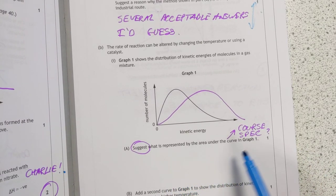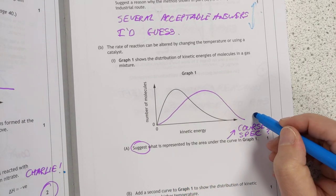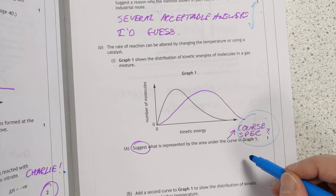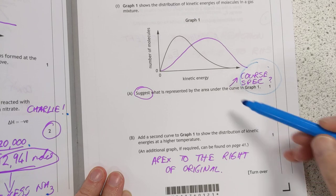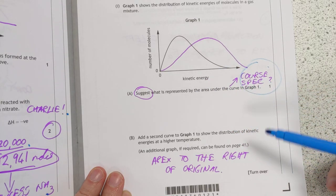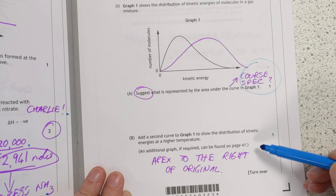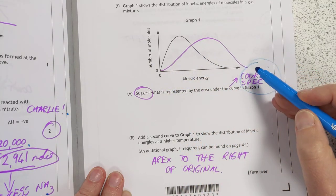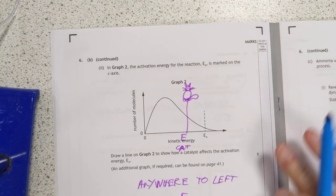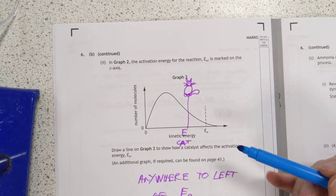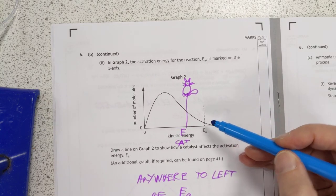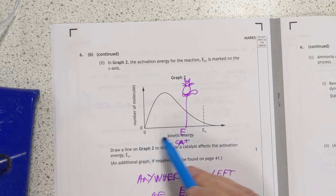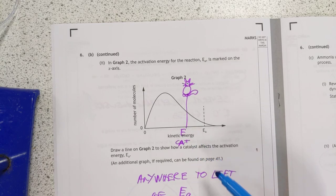Suggest what is represented by the area under the... I'm not sure about this one. I might come back to this one at the end if I remember. Because I know what the answer is, but I don't know if you know what the answer is. Add a second curve to show the distribution. You've got to add a second curve with the apex to the right of the line we started here. Graph Z, this is a kinetic energy distribution graph, and there's the activation energy on there. Your second line is anywhere to the left. Your activation energy with a catalyst.